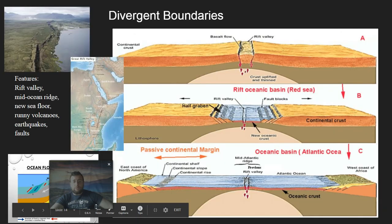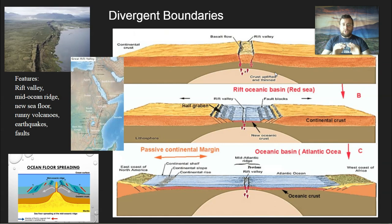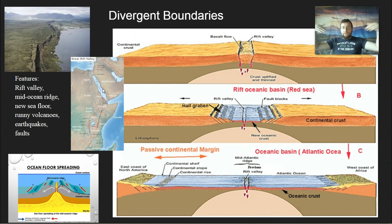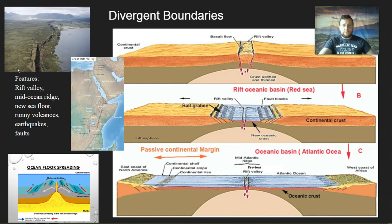Divergent boundaries' unique features include a rift valley — a crack in the surface through which lava seeps, forming new seafloor crust. As a continent splits, like Africa separating from the Arabian Peninsula, water from surrounding oceans seeps through and forms new oceans. The Red Sea is constantly splitting and will eventually become a new ocean. The same thing is happening right now with the eastern part of Africa — it's cracking and will eventually do the same.